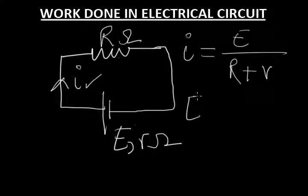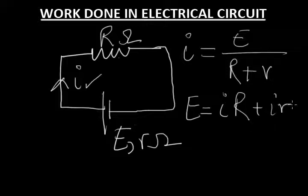And it can be calculated as I times capital R plus I times small r. Now if we look at the circuit, we can understand that I times capital R is